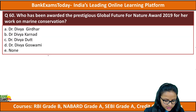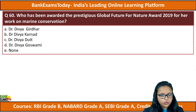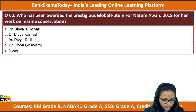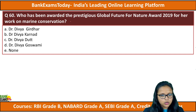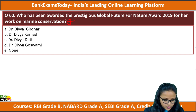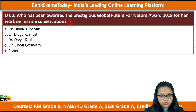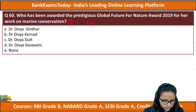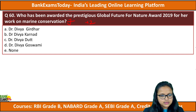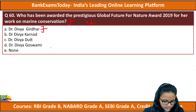Moving to question number 60: who has been awarded the prestigious Global Future for Nature Award 2019 for her work on marine conservation? There were two other recipients of the award and one was Indian. The options are Divya Girdar, Divya Karnad, Divya Dutt, Divya Goswami, or none of the above. The answer is B — Divya Karnad.